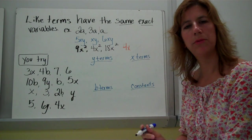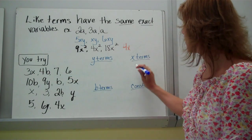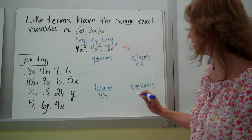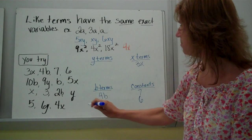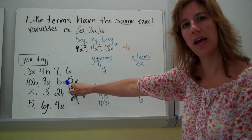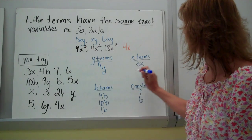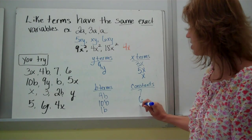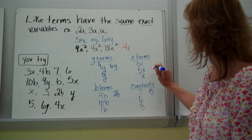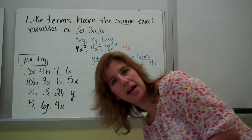Hopefully as you went along, you crossed them off or just checked yourself to make sure you had the right number, because it's very easy to forget one. Here you have 3x — it has an x as its variable so that would be an x term. Then 4b. Then 7 — no variable, so that's called a constant. Then 6, 10b, 9y, just plain old b. If I have b, that means I have 1b. Then 5x, x, 3, 2b, y, 5, 6y, and 4x. If you need more help, make sure you ask for clarification during class.